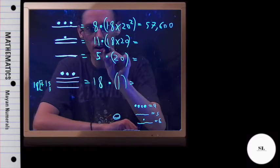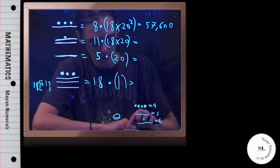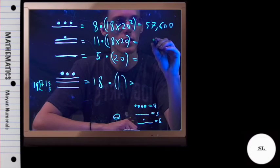Now in the next place, I've got 11 times 18 times 20. So let's do that. 3,960.